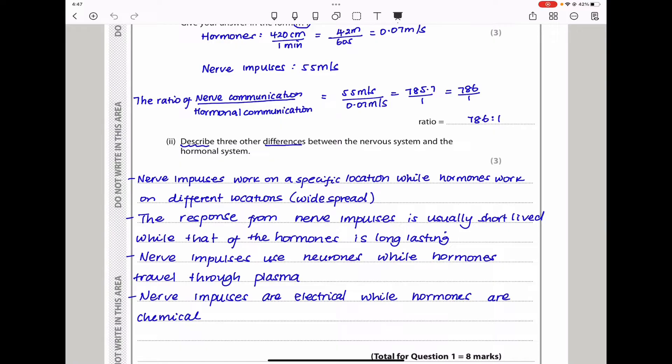The next part is the response from nerve impulses is usually short-lived. After the effect has been done, you will not feel the remnants of the effects from the nerve impulses, while the hormone will remain in the body for a little bit longer in comparison to the nerve impulses. So we can say that hormones are long-lasting or long-lived in comparison to the nerve impulses.